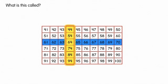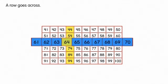What is this called? It is a column. A column goes up and down. A row goes across.